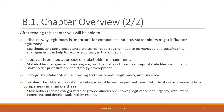You will then be able to apply a three-step approach to practical stakeholder management. You will learn that stakeholder management is an ongoing task that may follow three ideal steps: first, stakeholder identification — getting to know who your stakeholders are as a company; then stakeholder prioritization — determining who are the most important and who may be less important; and finally strategy development — deciding how to deal with these different types of stakeholders.